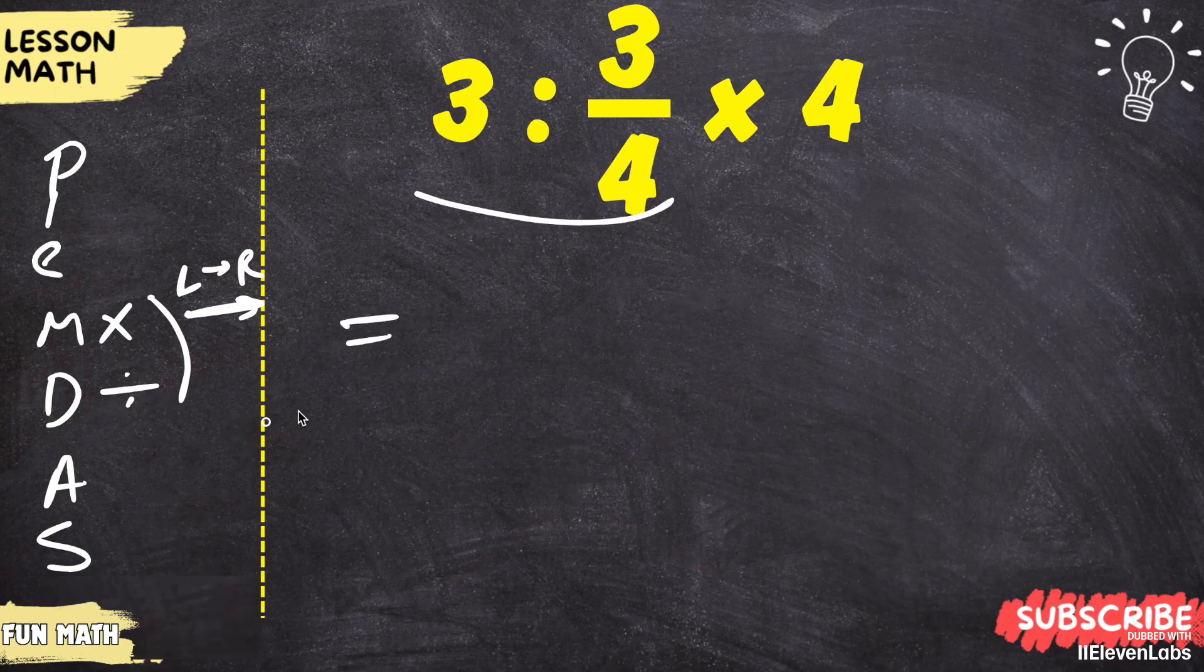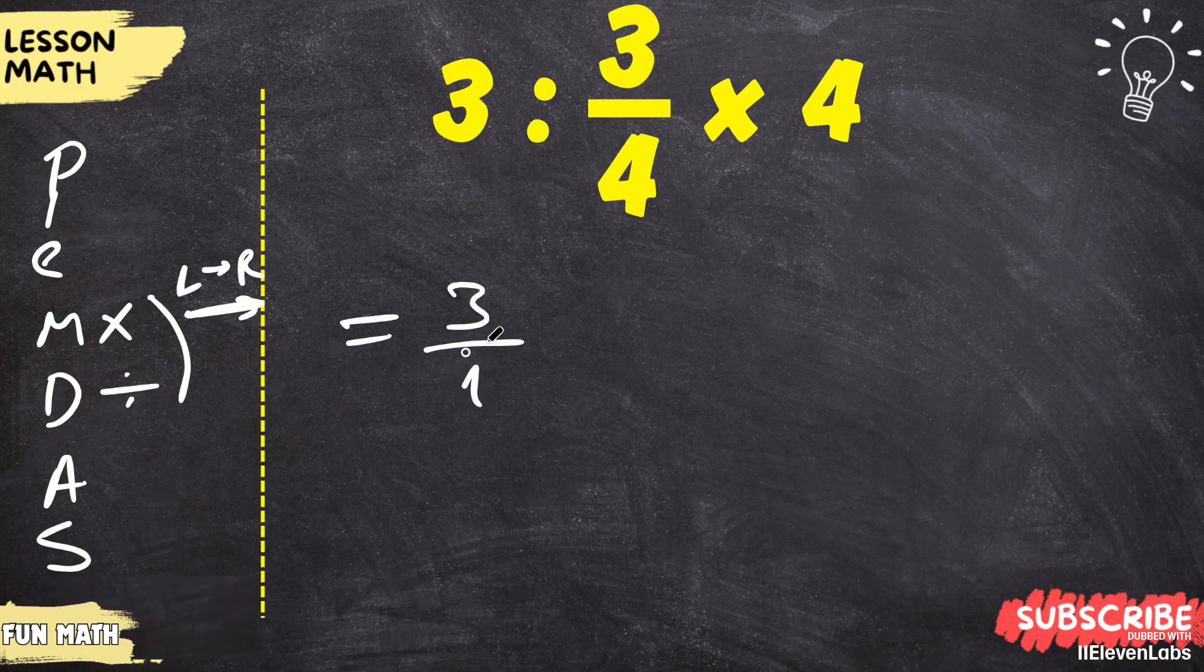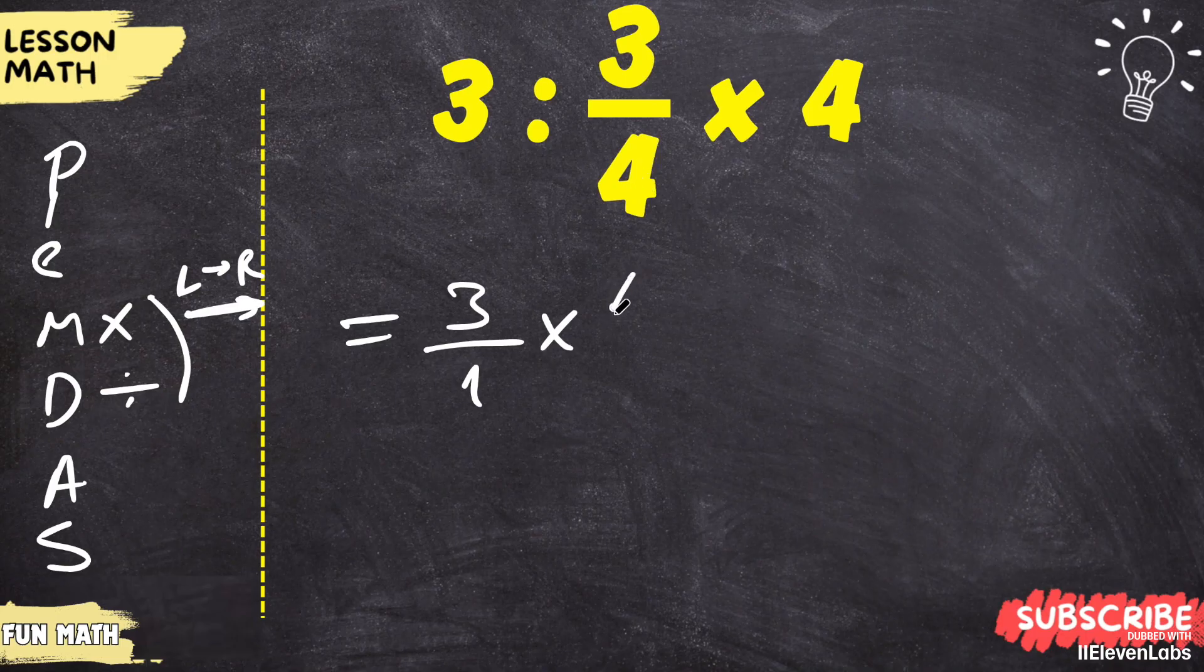First, we will perform the division here. In division, the denominator of the first is 1. The division turns into multiplication. 3 over 4 is inverted.